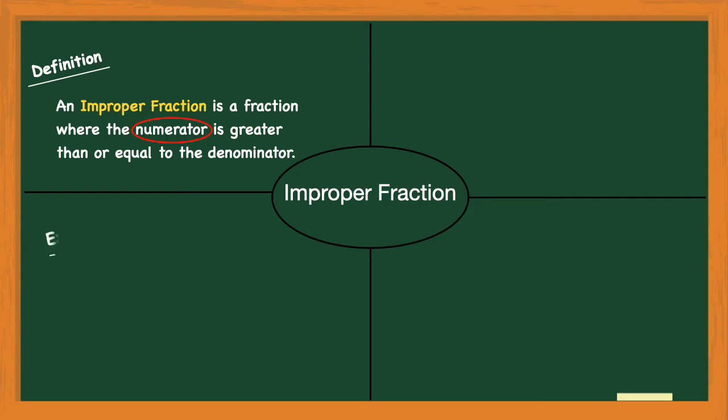So let's look at some examples. My first example is five-thirds, or five over three. The definition of an improper fraction is where the numerator is greater than or equal to the denominator. So I have a numerator of five which is greater than the denominator of three, so five-thirds is an improper fraction.